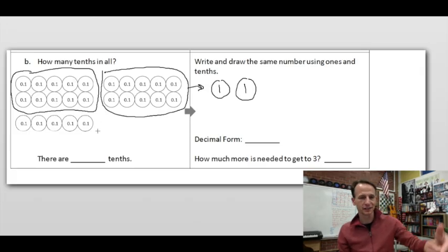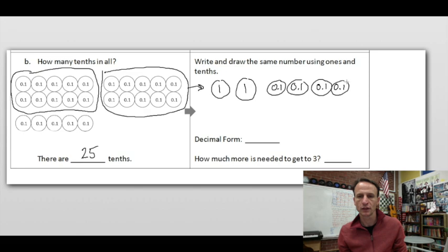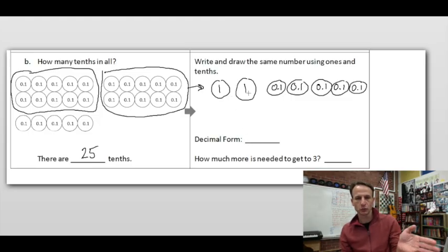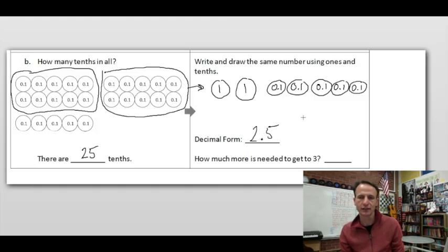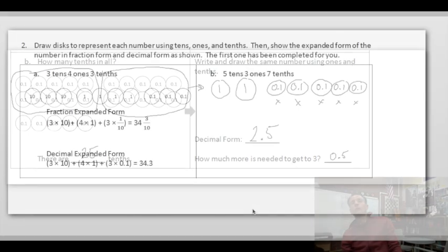How many tenths are there? Ten, twenty, and then we have five more — so twenty-five tenths. Write 0.1 first, then circle it, otherwise you might make too small a circle. In decimal form: two and five tenths. How much more is needed to get to three? We need five more tenths. Five tenths more would get us to three.